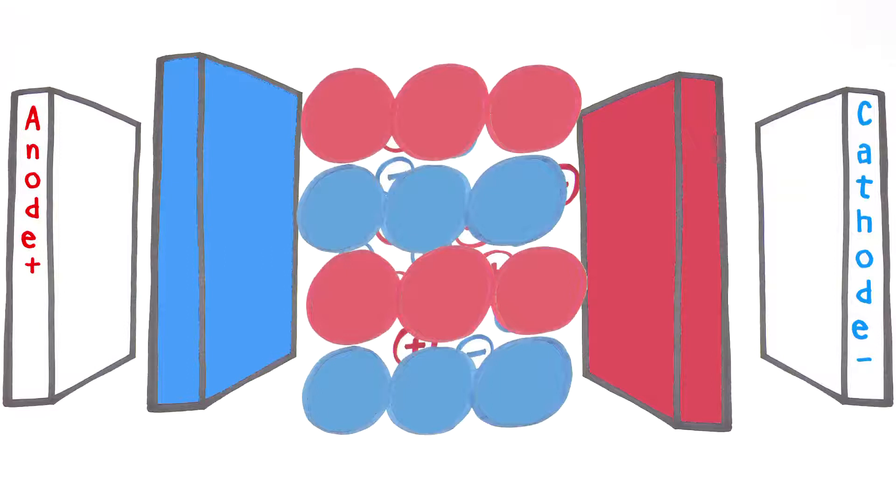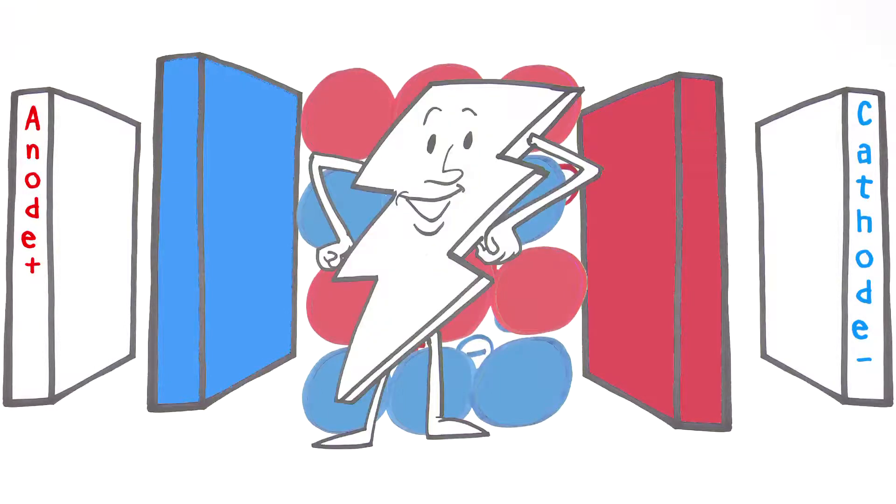That's where the resin comes in. It acts as a bridge to carry electric current and ions through the module to produce high purity product water.